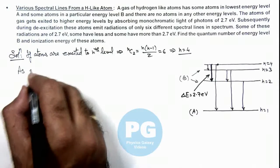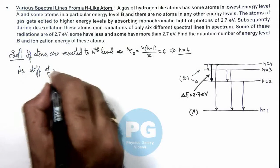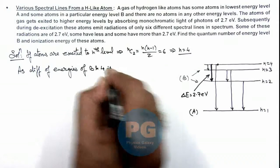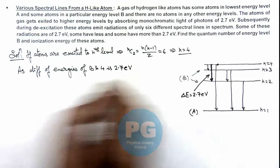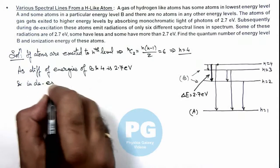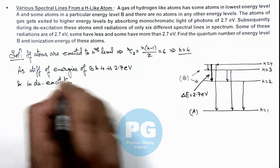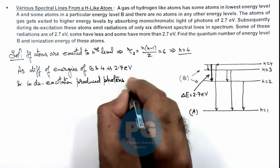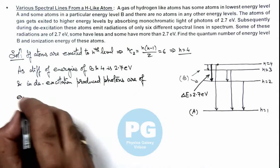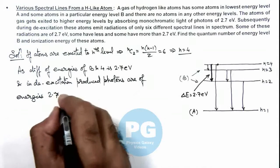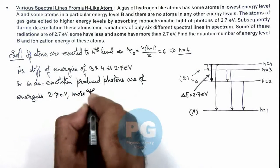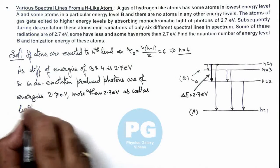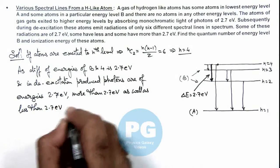Here we can say as difference of energies of B and 4 is 2.7 electron volts, and in de-excitation produced photons are of energies 2.7 eV, more than 2.7 eV, as well as less than 2.7 eV.